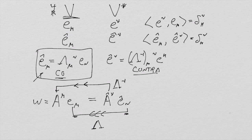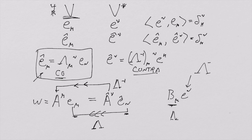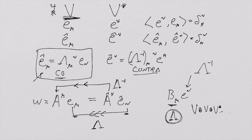Now we need to apply this to tensor products. We can do it for the dual vector space because we know it will be a contravariant transformation and its components will have a covariant transformation. But now we have to be able to do transformations for things that look like V ⊗ V ⊗ V*, and so on. We have to be able to transform objects from these tensor product spaces.